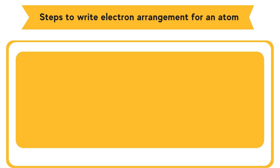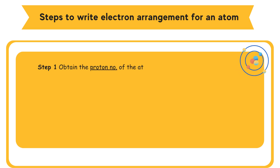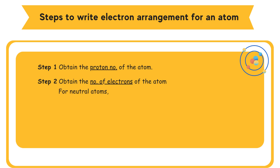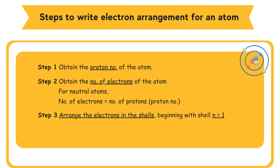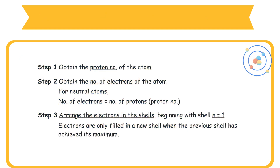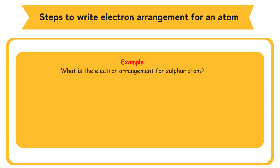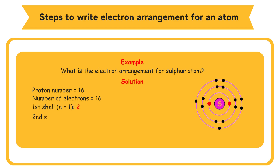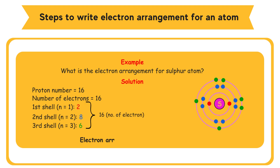Steps to write the electron arrangement for an atom: Step 1 — obtain the proton number. Step 2 — obtain the number of electrons (for neutral atoms, electrons equal protons). Step 3 — arrange the electrons in the shells beginning with n=1, filling a new shell only when the previous shell is full. Example: sulfur atom has proton number 16, so electrons = 16; electron arrangement = 2, 8, 6.